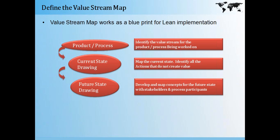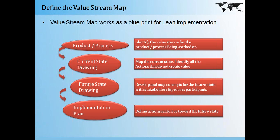The next step would be creating a future state drawing. After removing all the non-value-added activities, you need to create a future state drawing which would help you develop the map concept for the future state, and you will need to take the approval of your stakeholders and process participants. Once this is done, the fourth and final step is the implementation plan — you define actions and drive towards the future state, making sure all the changes and required interventions are made.